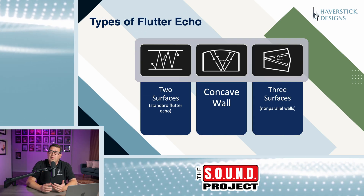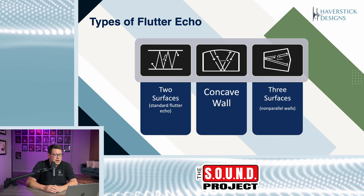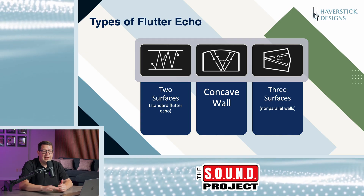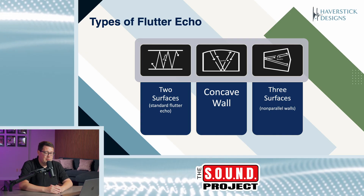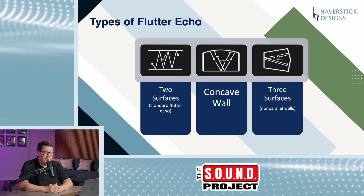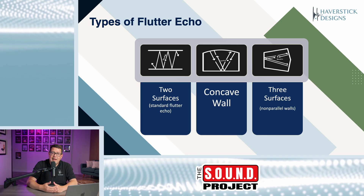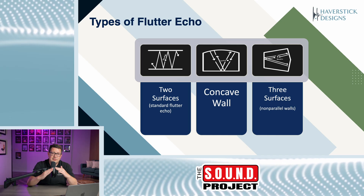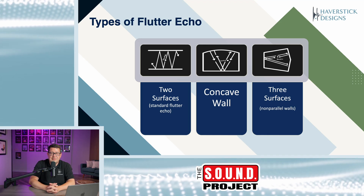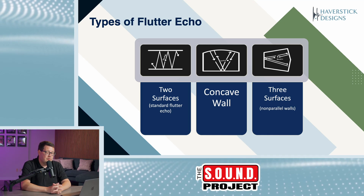There are different types of flutter echo. The most common occurs between two parallel surfaces, but you can also have it between a concave wall or a concave ceiling and a flat floor — as shown in the center image on the slide. That can create a flutter echo scenario. It can also happen between three surfaces where you have one flat surface and two other surfaces that are peaked, such as a peaked ceiling. If a room is designed that way and not treated properly, you can still get flutter echo.